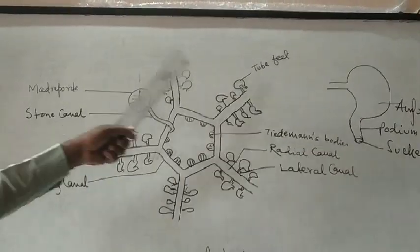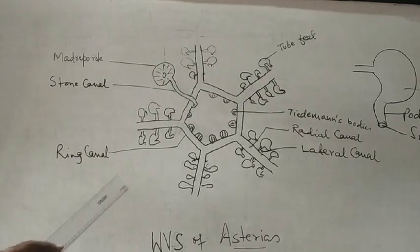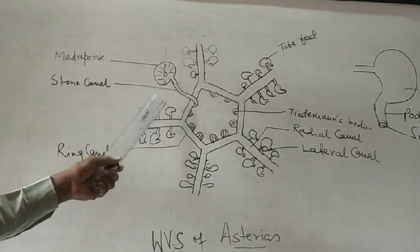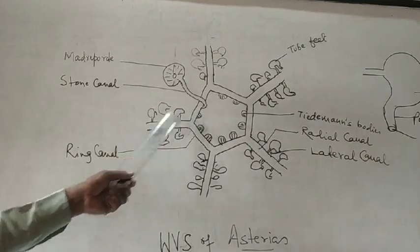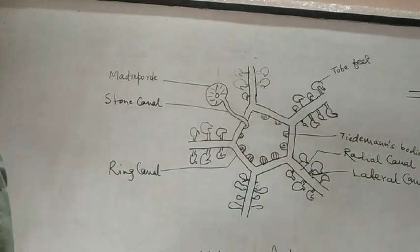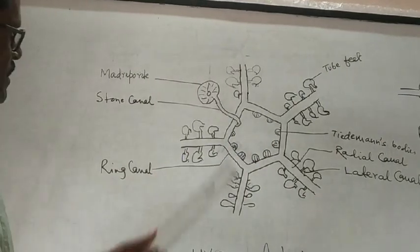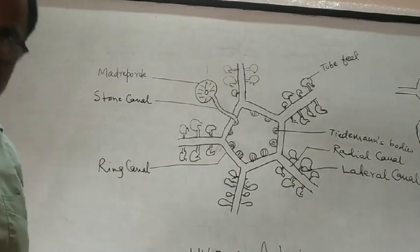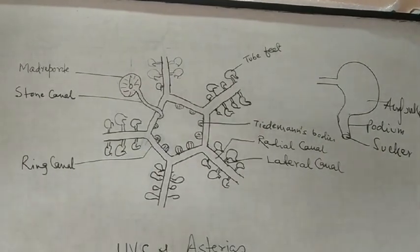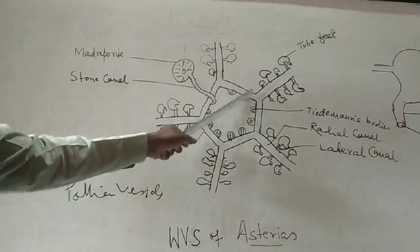So, this is the complete units of the water vascular system, which includes first the madreporite, second the stone canal, then ring canal, radial canal, lateral canal, and tube feet. And some special structures also present. They are the Tiedemann's bodies. And also mind that some special structure also found. These are known as polian vesicles, found at that ring canal. But in Asterias, the polian vesicles are absent. So, it is not shown here.